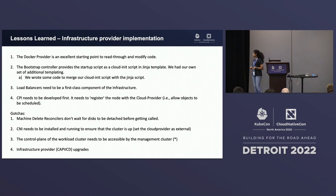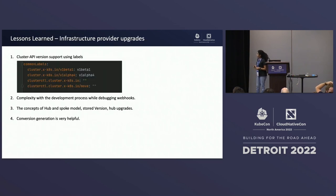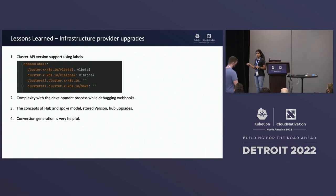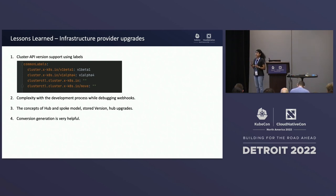Remember to set the cloud provider as external for the kubelet configuration. Also, take note of these two labels — they need to be set on your CRDs. This is an important step: it tells the core CAPI component which API version of your infrastructure provider to use. It becomes even more important when you have multi-version API support ready. We actually hit this issue where we had multi-version API support ready and forgot to set these labels — our newer API version resources were somehow getting reset to older content. We had no clue why, and thanks to the Cluster API folks who helped us debug. It's a simple change but a very important thing to remember.